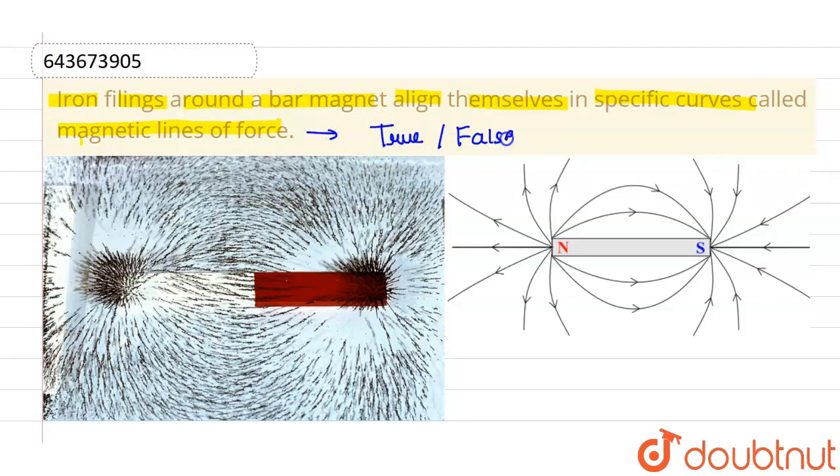Let me tell you the answer - this given statement is a true statement. Now why is this true? Because suppose you have a bar magnet, as shown in the figure...